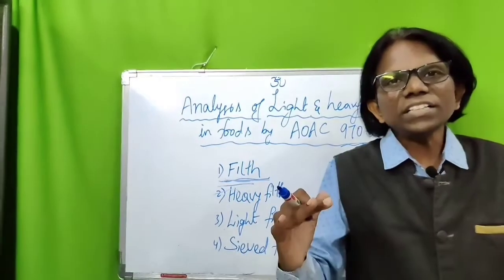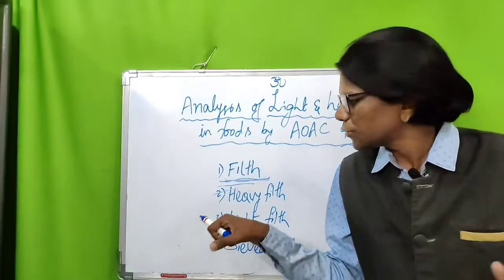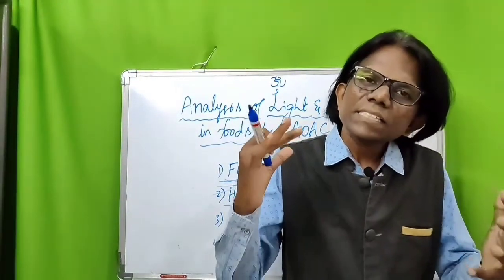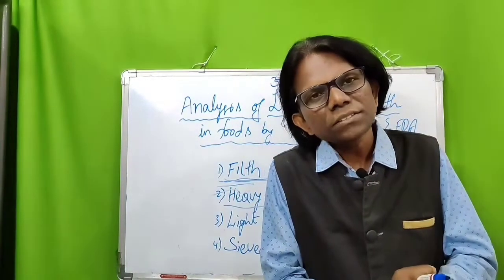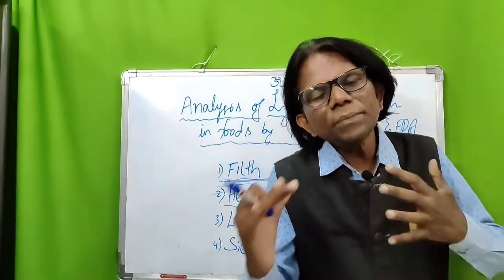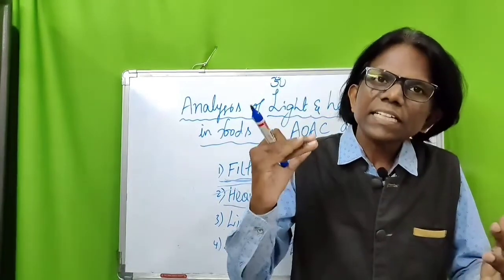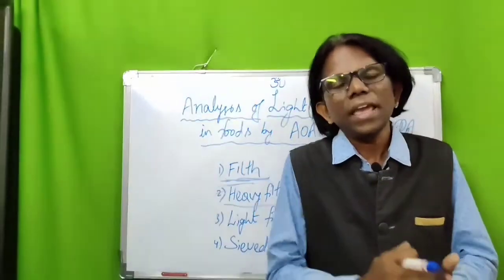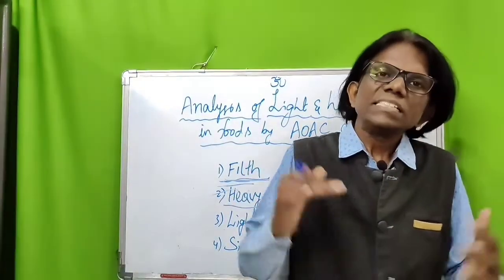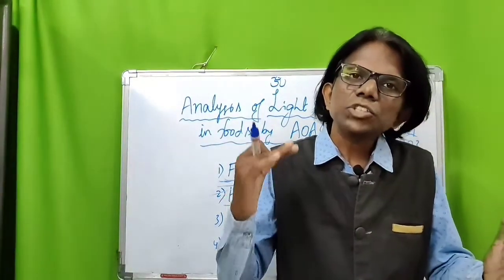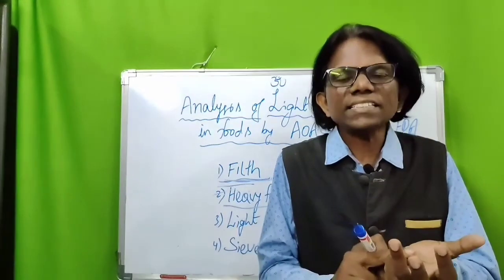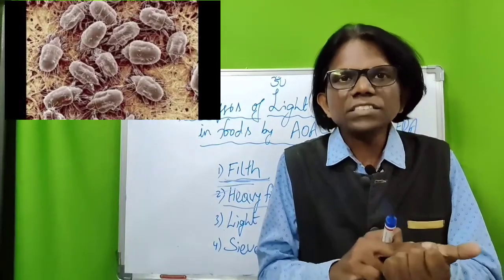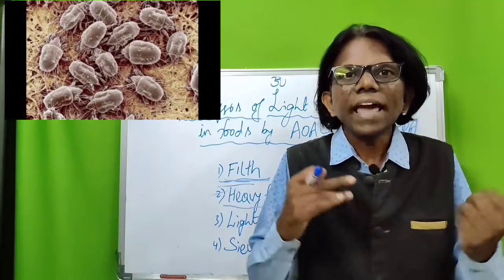Now, what is the definition of heavy filth? Heavy filth is heavy material separated from products by sedimentation, based on different densities of filth. Examples are sand, soil, insect excreta, rodent excreta, bird pellets, etc.